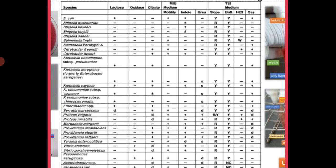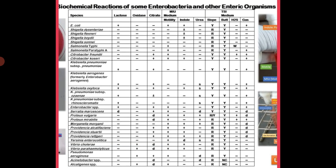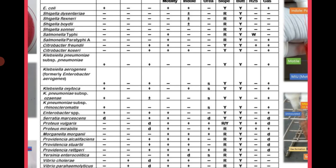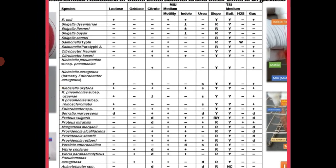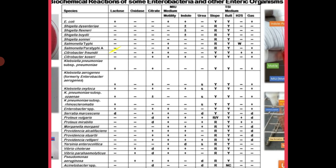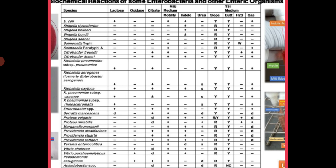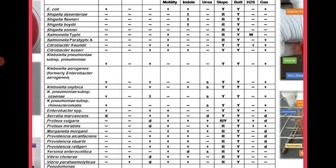In this reference table, biochemical characteristics of organisms are listed. E. coli is lactose positive. Shigella dysenteriae is lactose negative. Campylobacter flexneri is lactose negative, while Citrobacter freundii is lactose positive. Klebsiella pneumoniae is lactose positive, and Klebsiella oxytoca is lactose negative. Proteus mirabilis is lactose negative. These are the standard results for these organisms in a lactose fermentation test.